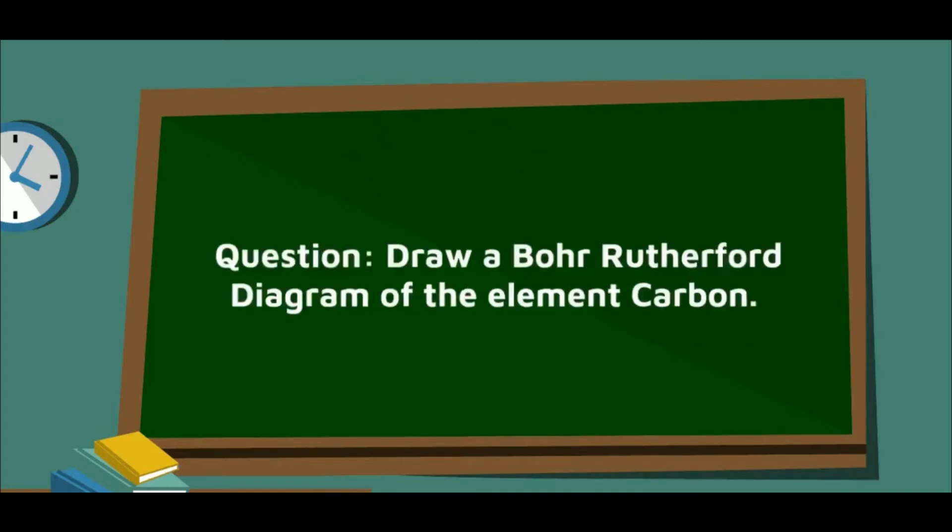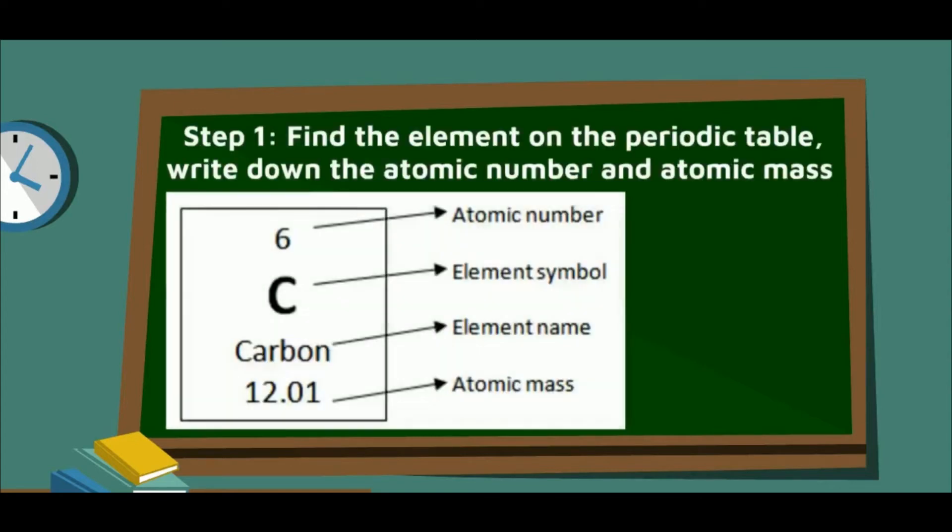Draw a Bohr-Rutherford Diagram of the element carbon. For the first part, we need to find the atomic number and the atomic mass, which we can find on the periodic table.